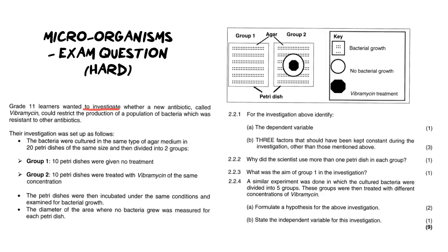Now before we go any further let's just quickly isolate the independent and dependent variable. So we know in the beginning it says to investigate whether a new antibiotic, so that is going to be our one variable, vibramycin, could restrict the production of a population of bacteria, in other words growth of that bacteria. And so now what we have is our two variables. So let's keep that in mind and let's keep moving through the paragraph.